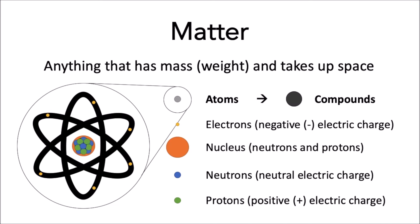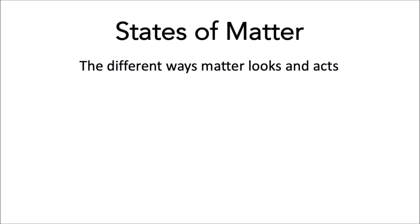These atoms and compounds can look and act in different ways. The different ways matter looks and acts are called states or phases of matter. For the rest of this video, I'll switch back and forth between the words state and phase, but know that I'm talking about the same thing.